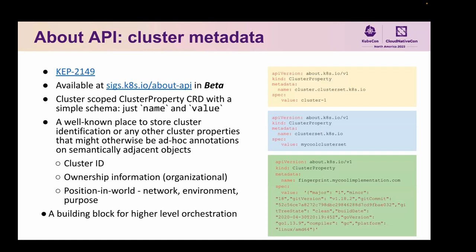The About API is described in Kubernetes Enhancement Proposal number 2149. It's currently in beta. It is a cluster-scoped ClusterProperty CRD with a very simple schema — just name and value. You can store cluster identification and any other properties that are attached to the cluster as a concept. They replace annotations that you could typically find on objects that are similarly scoped. Well-known keys include the cluster ID, the organizational ownership, which ClusterSet a cluster belongs to, where it is on the network, which environments it's used for, and what the cluster's purpose is.